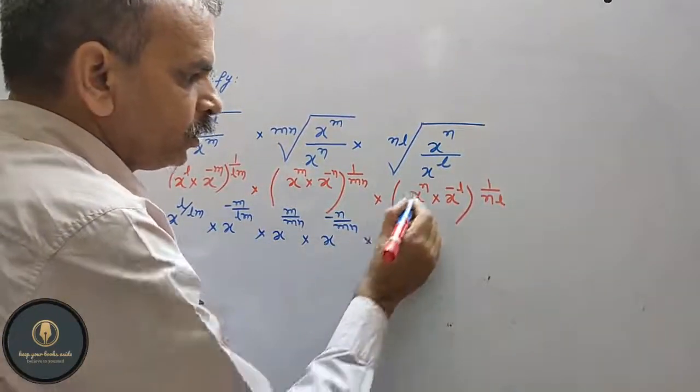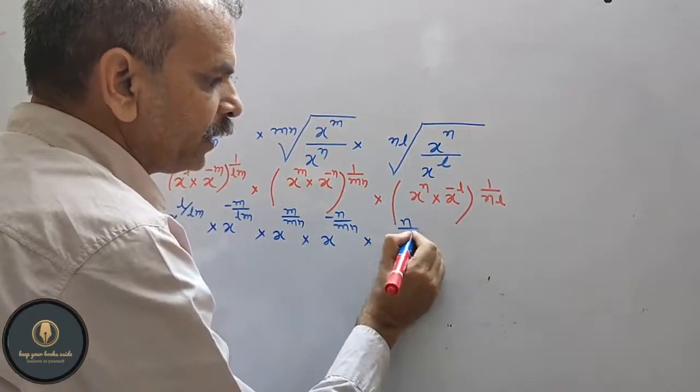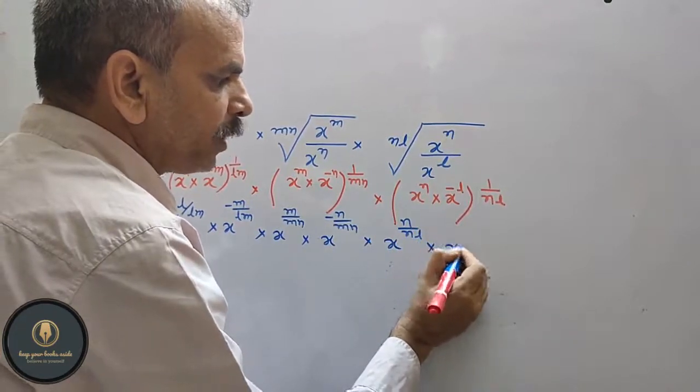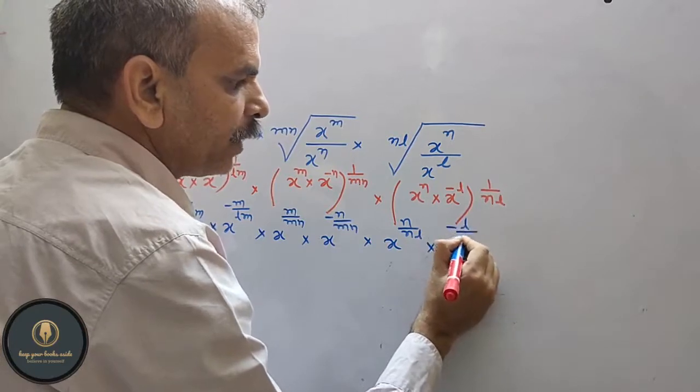Into x to the power of n, which is n by nl, into x to the power of minus l, so that becomes minus l by ml.